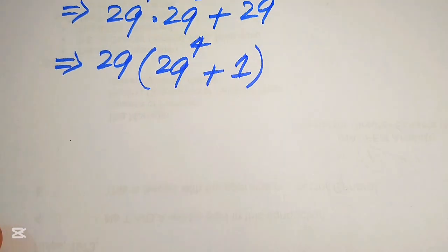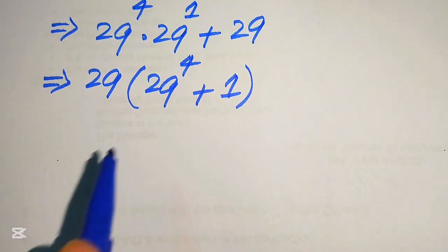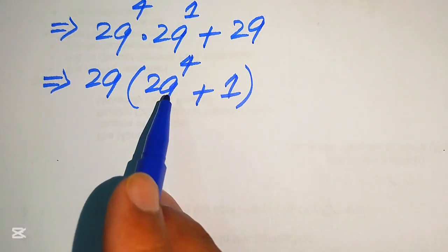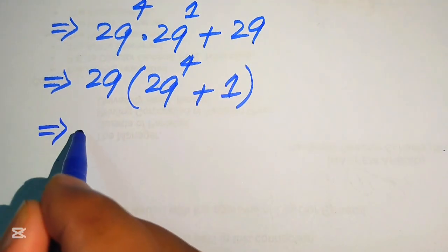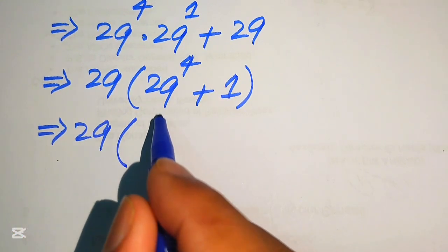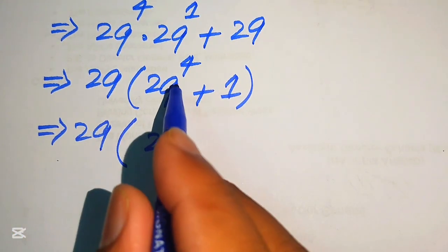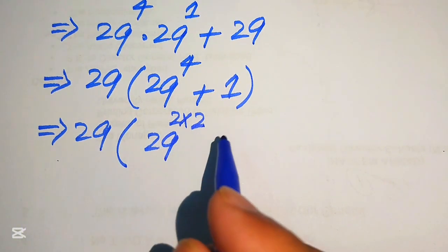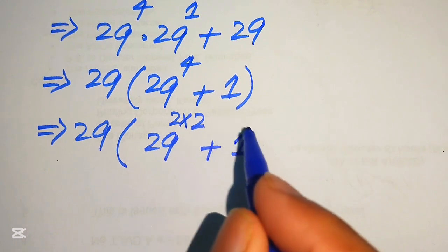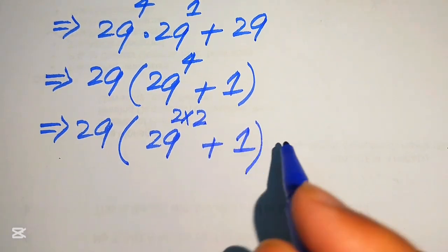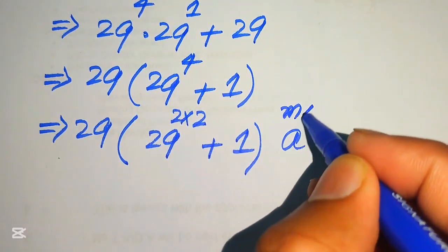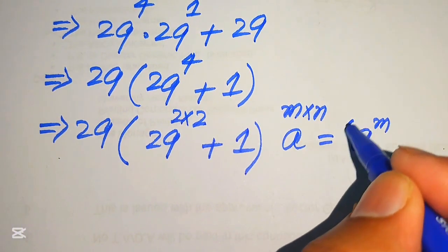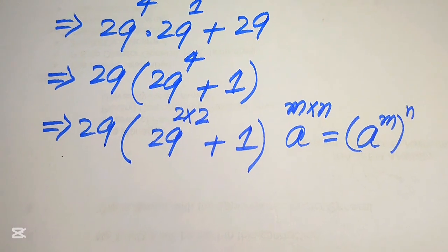Now we focus on the 29 to the power of 4 term. We rewrite 29 to the power of 4 as 29 to the power of 2 multiplied by 2. Using the exponent law that a to the power of m times n equals a to the power of m, whole raised to the power of n.